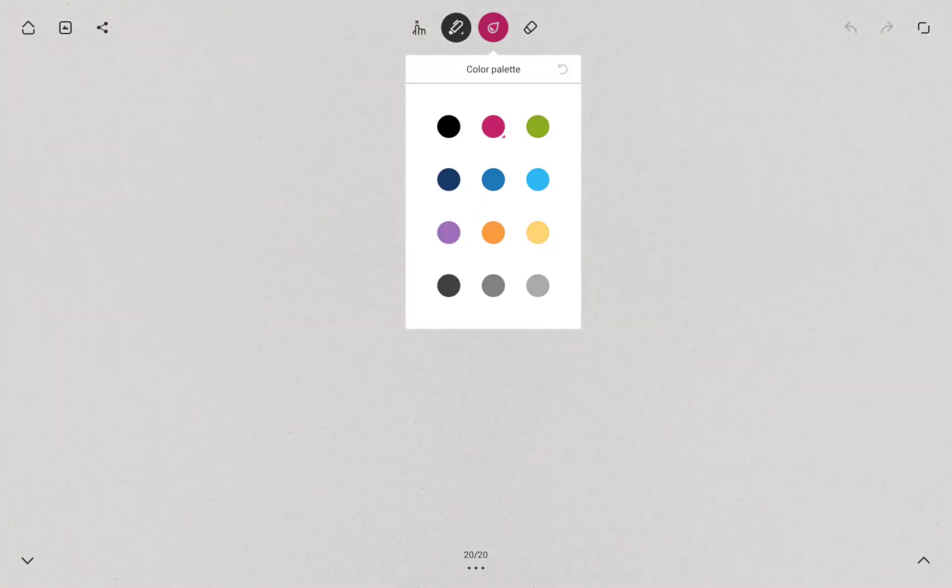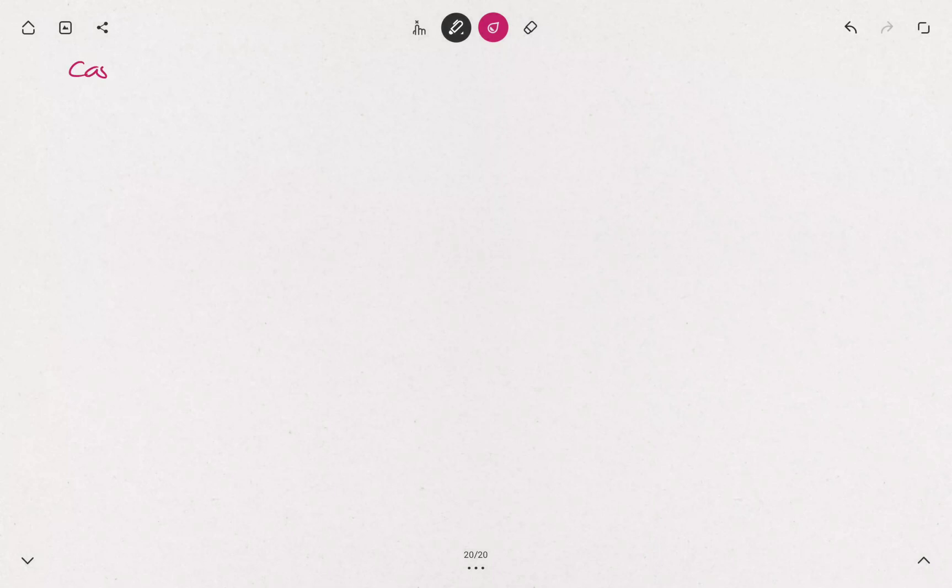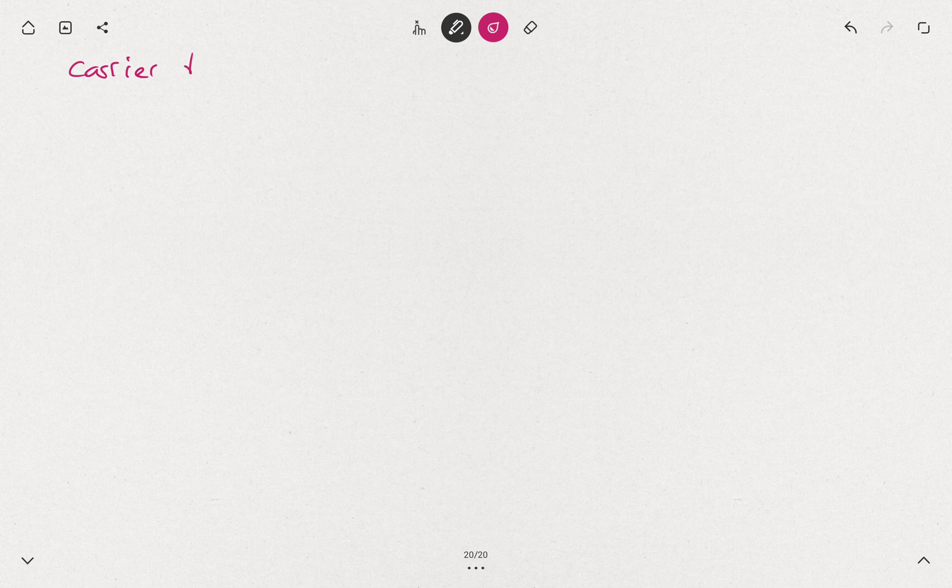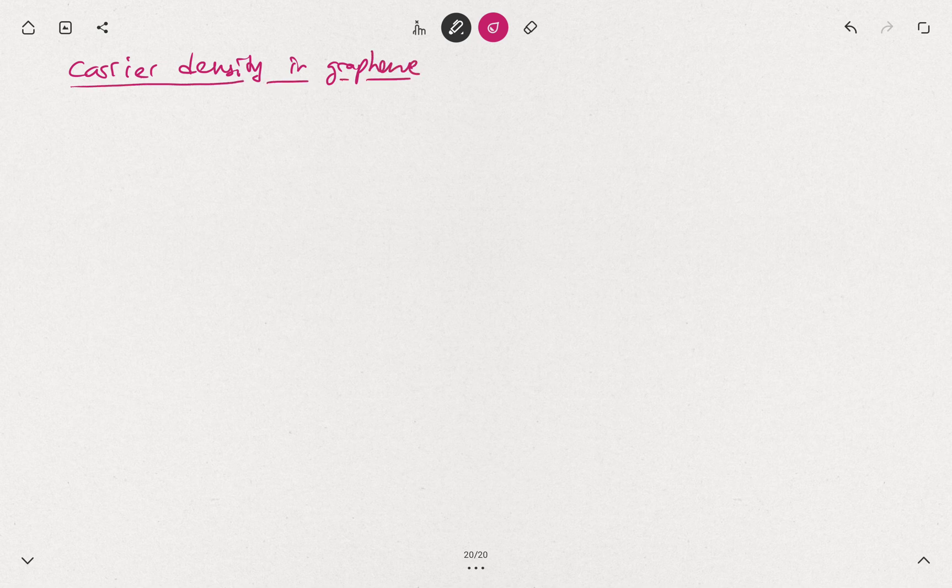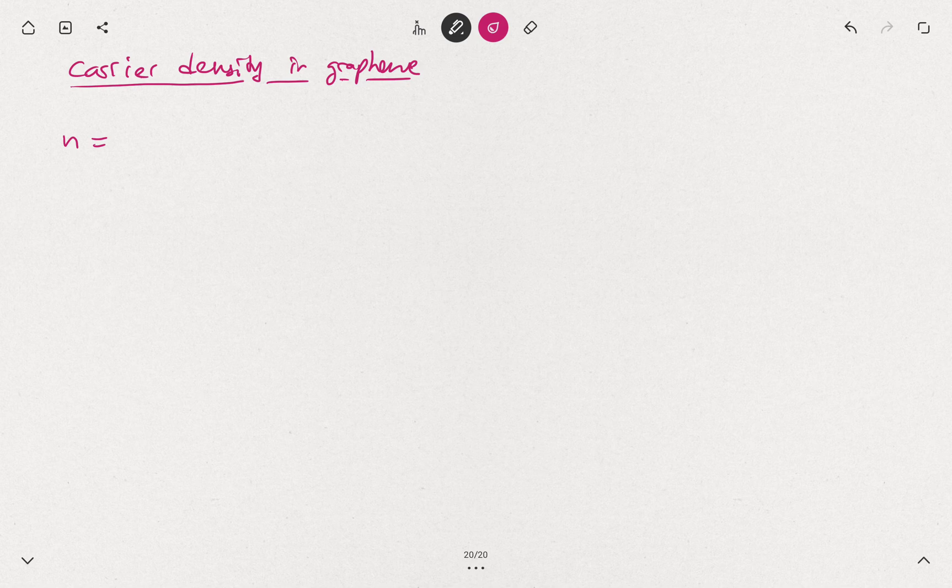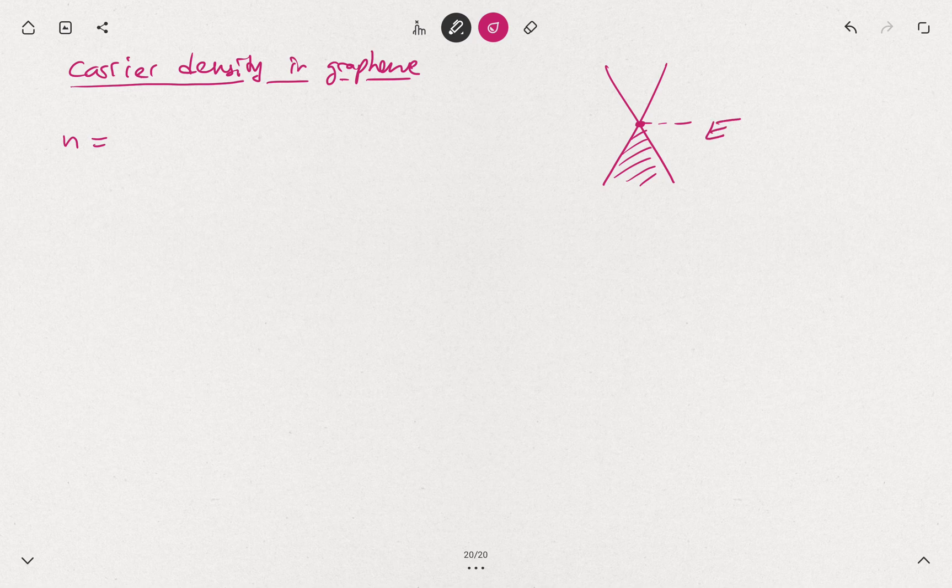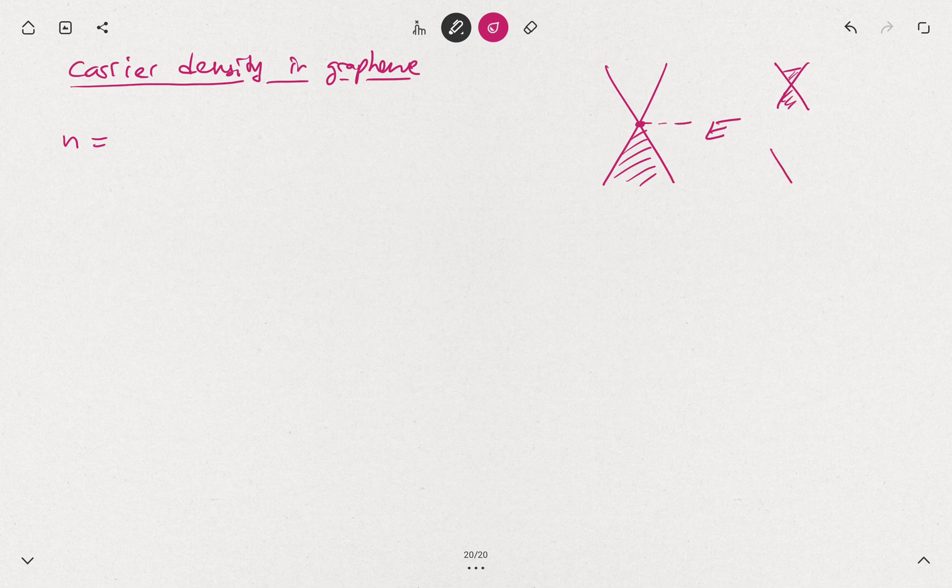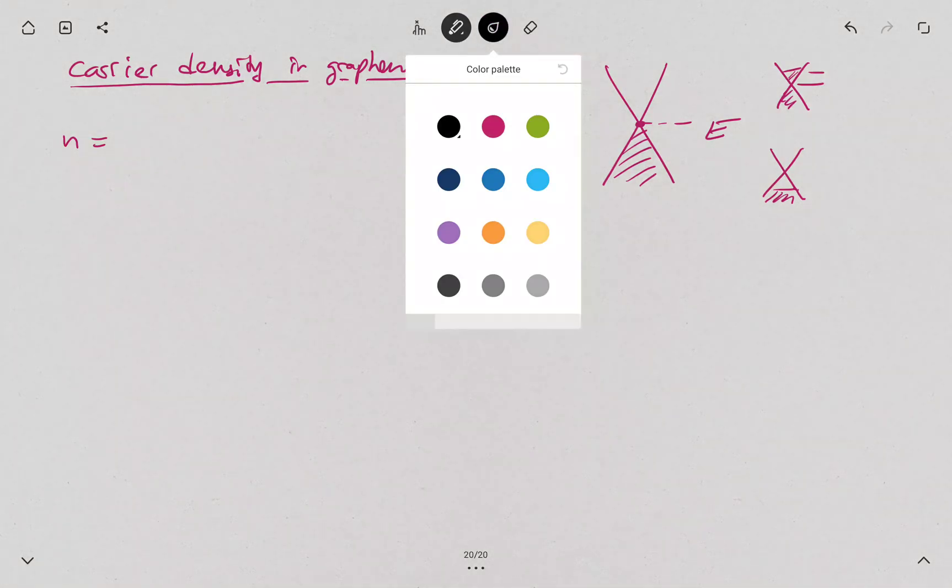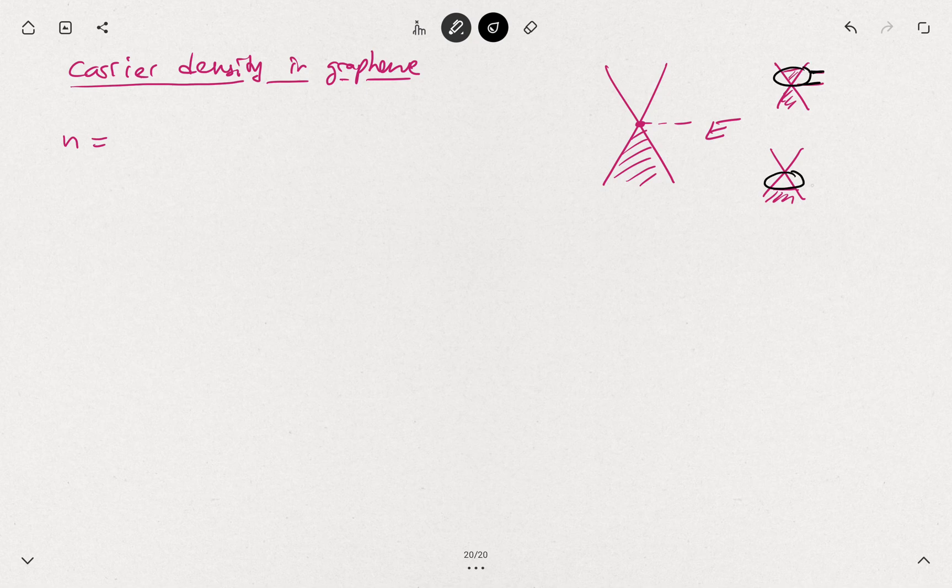Since we calculated already density of states, let's go one step further and talk about the carrier density in graphene. If you want to calculate the number of charge carriers, you would need to integrate density of states. We would count the Fermi level from the Dirac point because of the electron-hole symmetry. This looks like a good point. So at neutrality, your Fermi level is here. And if you are now putting some electrons or taking out some electrons from the system, then you will have several different scenarios. The Fermi level goes up or it goes down depending whether you are taking electrons in or out.